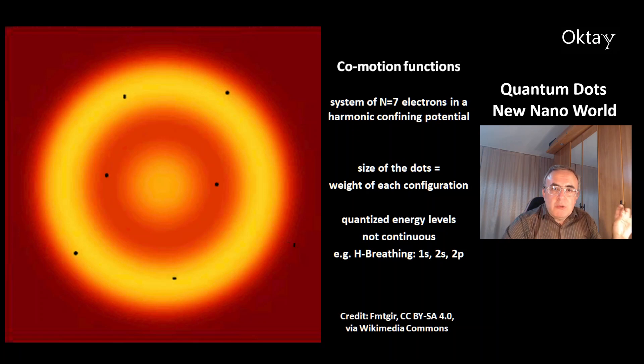This is a co-motion function of a system with N=7 electrons in a harmonic confining potential. The size of the dots represent the weight of each configuration.